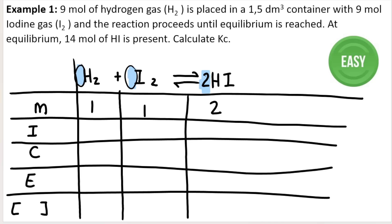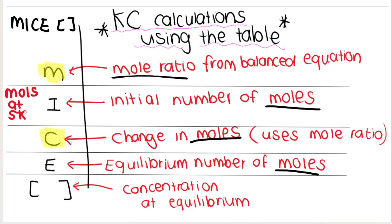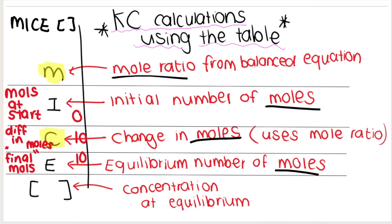When I say initial number of moles, that means the amount of moles you have at the start of your reaction. Equilibrium is your moles when the system reaches equilibrium — not the end of the reaction, but when it reaches equilibrium. And your change in moles is the difference in moles. For example, if you start with zero and end up with ten, your change is plus ten. Or if you started with nine moles and ended with six, your change is negative three — you used up three moles.